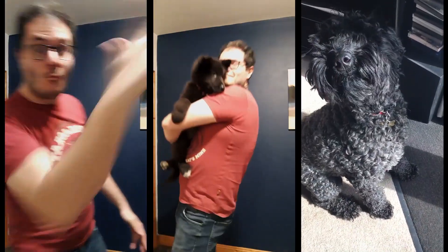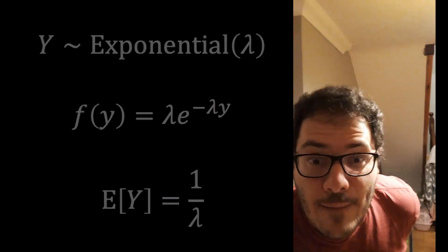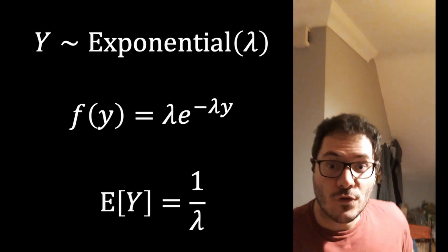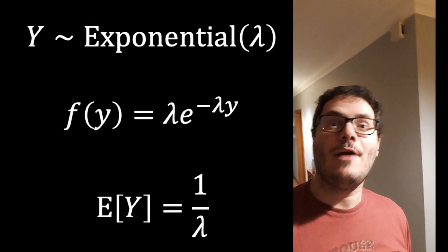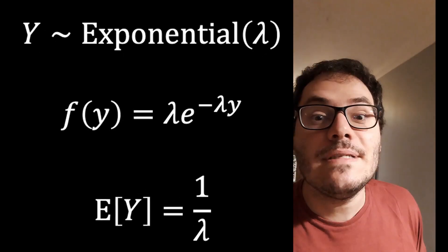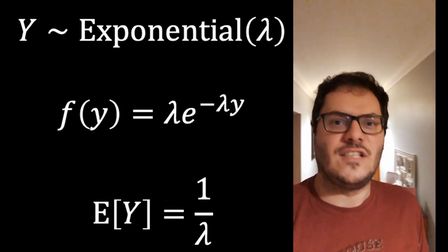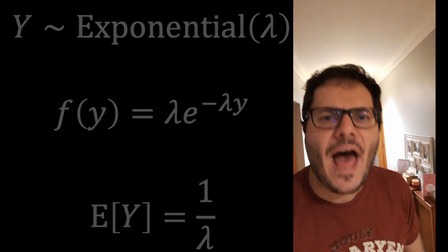The exponential distribution is continuous. Be very careful with the parameterization now — lambda times e to the minus lambda Y. One over lambda is the expected value.